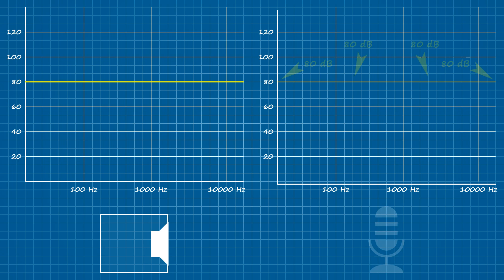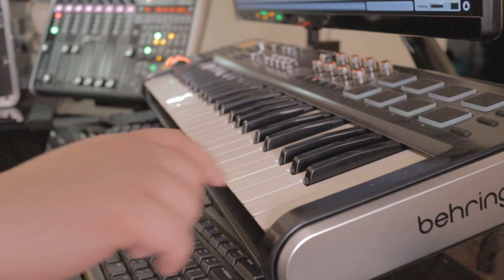However, if we replace the measurement microphone with a human listener, that's where things get interesting. Even though the acoustic energy emanating from the speaker is perfectly consistent from one frequency to the next, that is not going to be the experience of someone listening to it. As it happens, our hearing is most sensitive around 4 kilohertz. It's the second to last note on your standard 88-key piano.